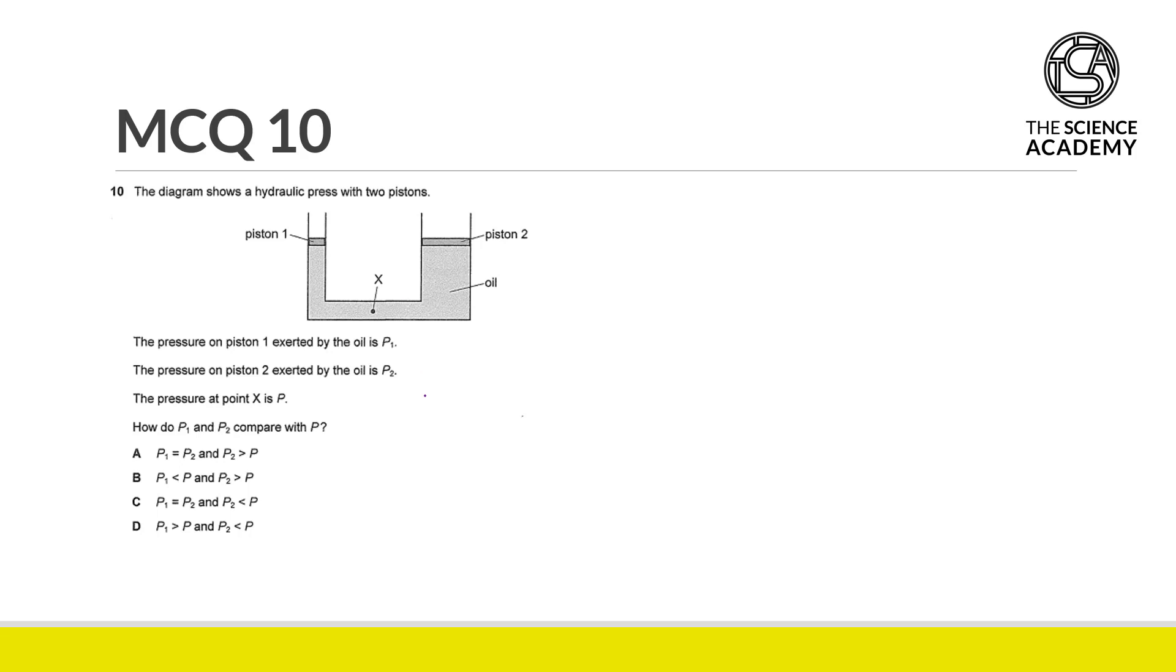For this particular question, we are given a hydraulic press with two pistons. The pressure on piston 1 exerted by the oil is P1. Let's draw P1 here, and the pressure on piston 2 exerted by the oil is P2. The pressure at this point is P.